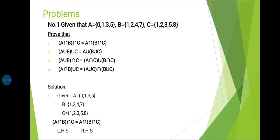Now we are going to problem number 1. Given A = {0,1,3,5,7}, B = {1,2,4,7}, C = {1,2,3,5,8}. Prove the following four: (1) A∩(B∩C) = (A∩B)∩C, (2) A∪(B∪C) = (A∪B)∪C, (3) A∪(B∩C) = (A∩C)∪(B∩C), (4) A∩(B∪C) = (A∪C)∩(B∪C).